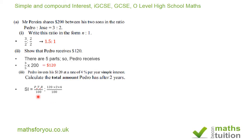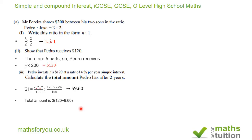To calculate simple interest, we use the formula P times T times R. I remember this using the word 'Peter' — the two E's have no mathematical significance. So P is 120 (the amount invested), T is 2 years, and R is 4%. That gives simple interest of $9.60. Because we want the total amount, we add 120 to 9.60, giving $129.60.